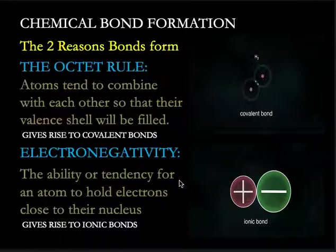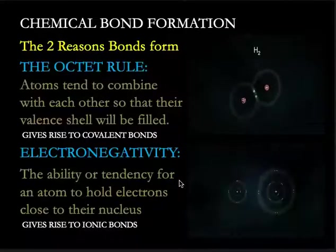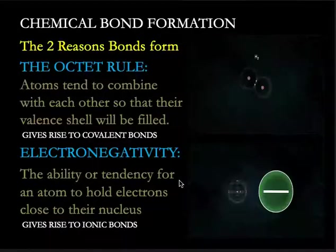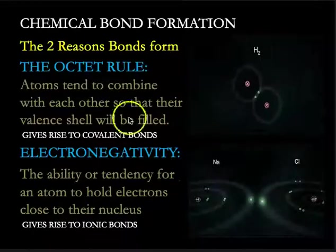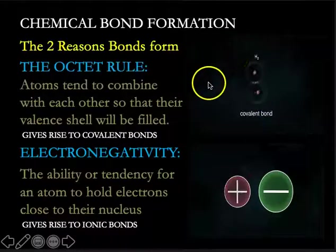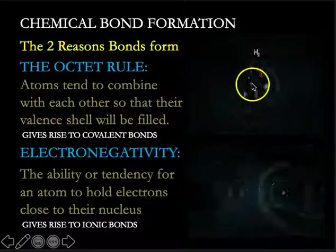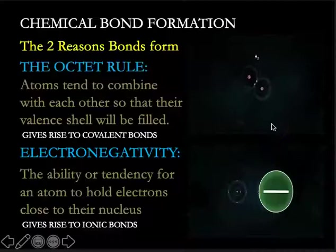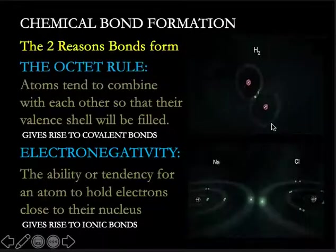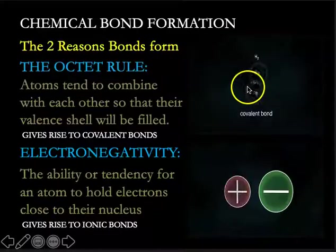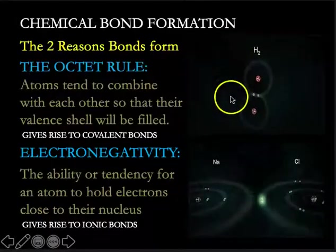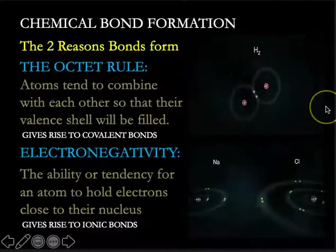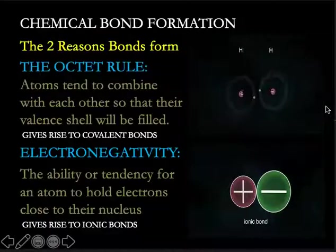Atoms form bonds for two reasons. One is the octet rule. And the octet rule says that atoms tend to combine with each other so that their outer shell, or a.k.a. valent shell, will be filled. What does this mean? Well, you can see up here, I've got two hydrogen atoms, each with one lone electron, and they come together to share electrons. Now, neither of these hydrogen atoms is happy individually because they only have one electron in that outer shell, and that outer shell likes to be filled with two electrons. But when they share electrons, now each one more or less has two electrons in this outer shell. That's the basis for a covalent bond.